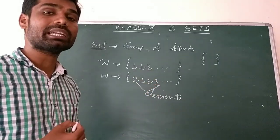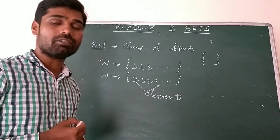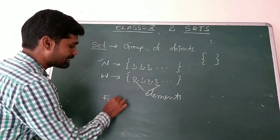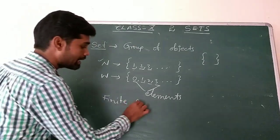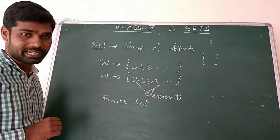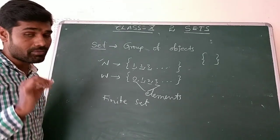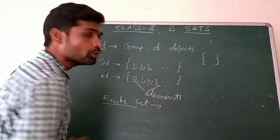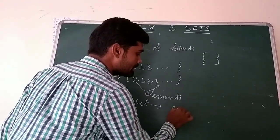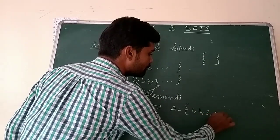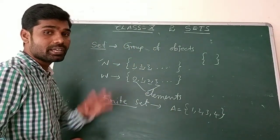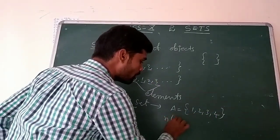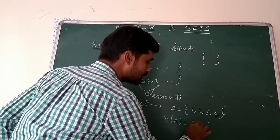How many types of sets do we have? The first types are finite set and infinite set. A finite set is one where we can count the elements. For example, A = {1, 2, 3, 4} — here there are 4 elements, so we can count them. Therefore, N(A), the number of elements in A, equals 4.